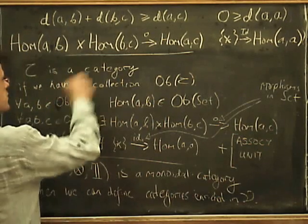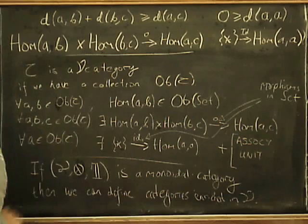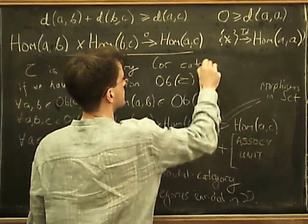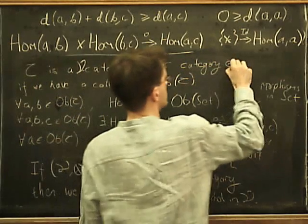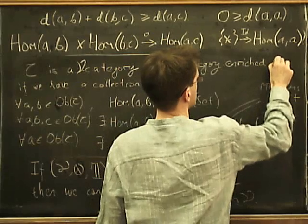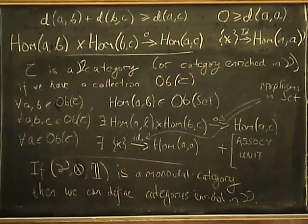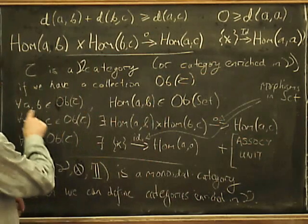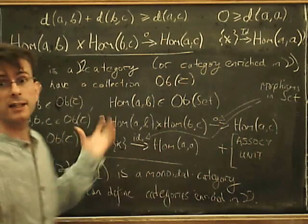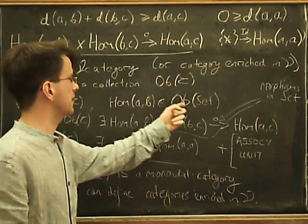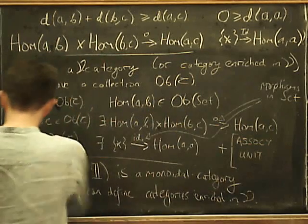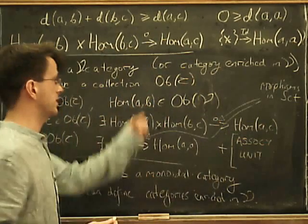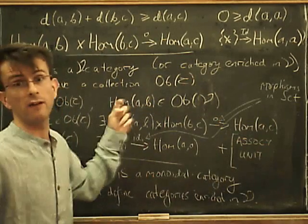So we just have to modify our definition now. So C is a V category, or category enriched in V. If we have a collection, so that remains the same. But now we have to modify this. So for each pair of objects, we want a hom(A,B) not to be a set, but we want it just to be an element in the category V. So we want it to be an object in V. So if V is a category of vector spaces, we just want the homs to be a vector space instead.